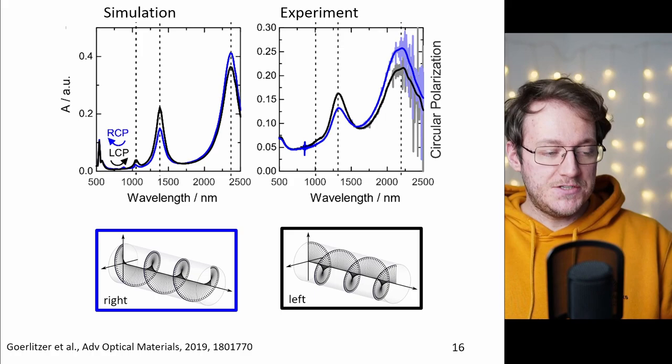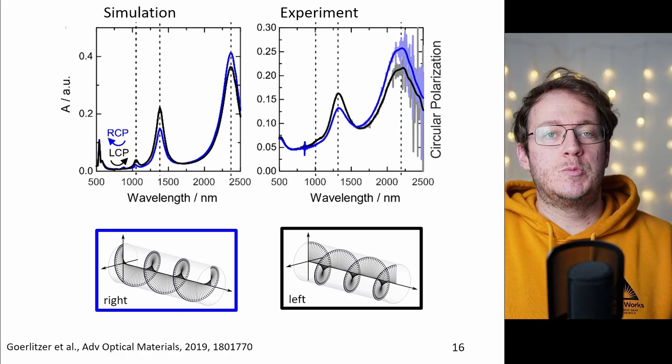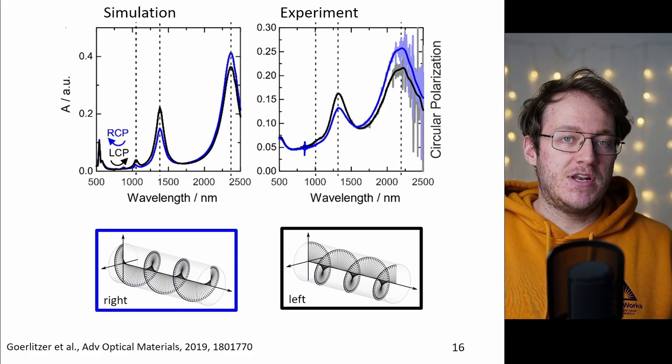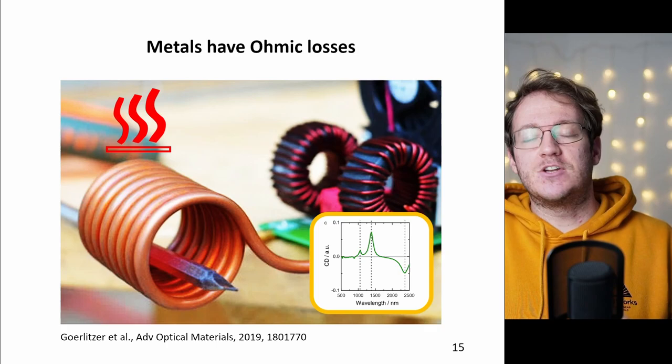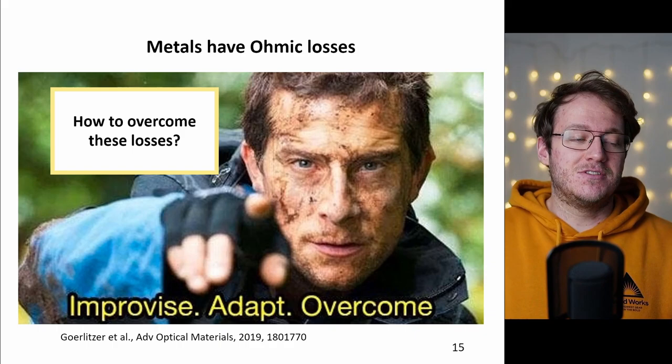Now if we look at the optical properties we illuminate it with left and with right circularly polarized light and indeed we see that this object is chiral because the two signals are not overlapping. Now there is one big problem that is typically associated with plasmonics and that is losses. Metals have typically losses which leads to heat but it also typically leads to very broad resonances. So the question is how can we overcome these losses?